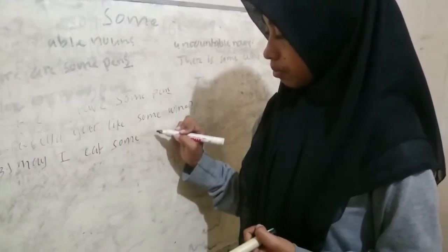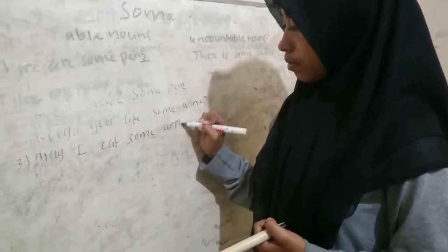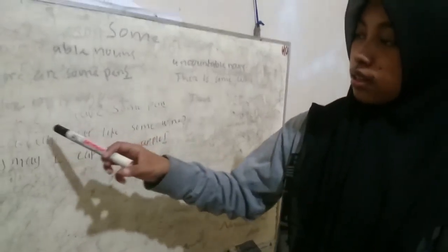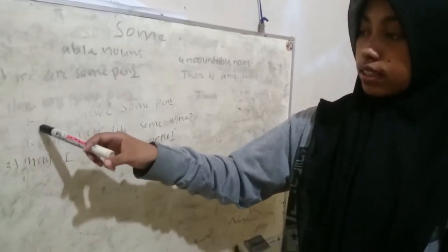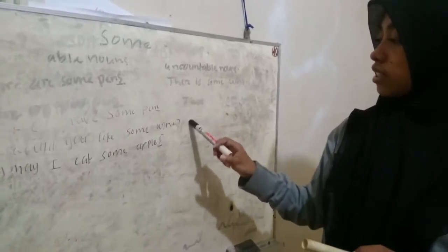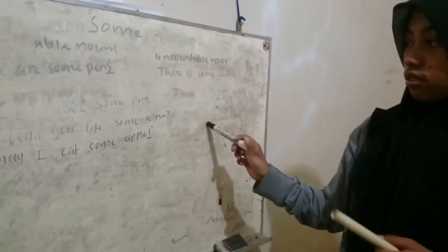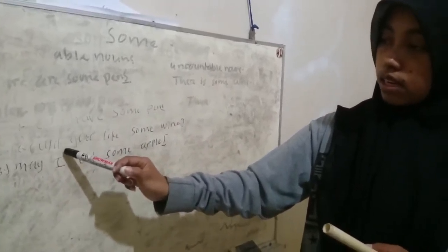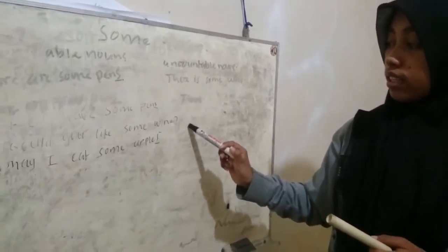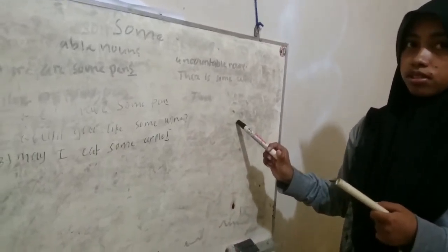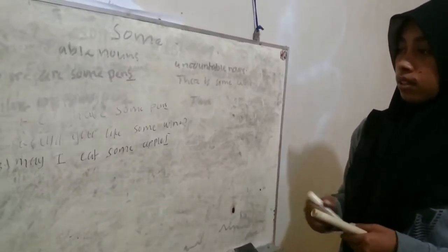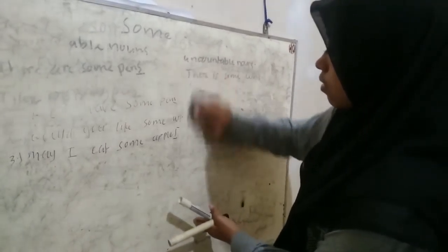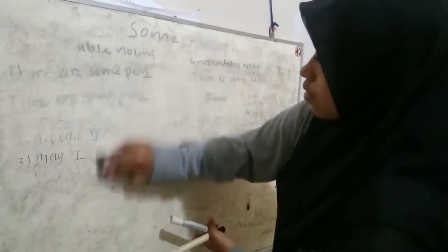In the third example: 'My eyes eat some apples.' In the first and third examples, we are using countable nouns. In the second example, 'Would you like some wine?' — this is using uncountable nouns.